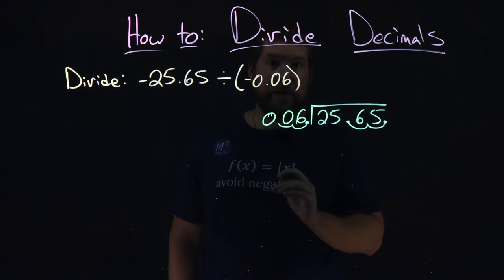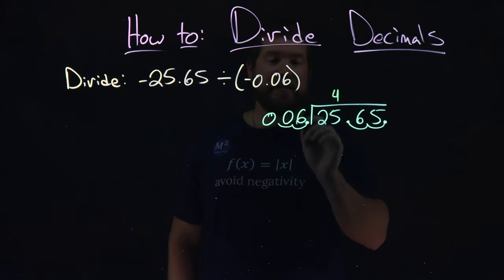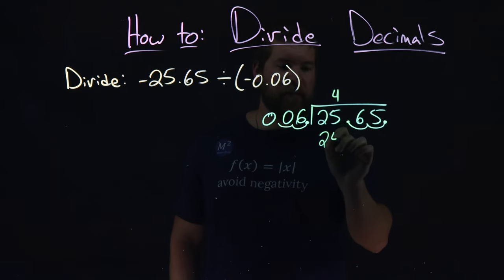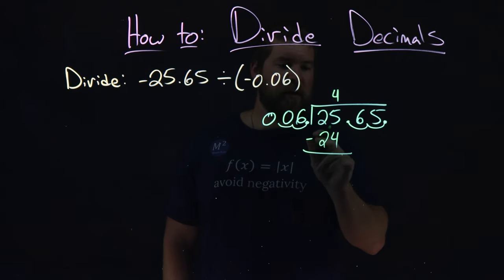How many times? 4 times. 4 times 6 is 24. Then we subtract these two numbers. 25 minus 24 is 1.